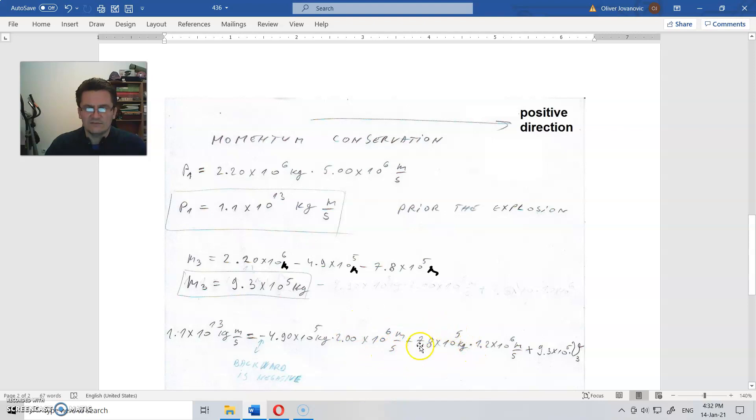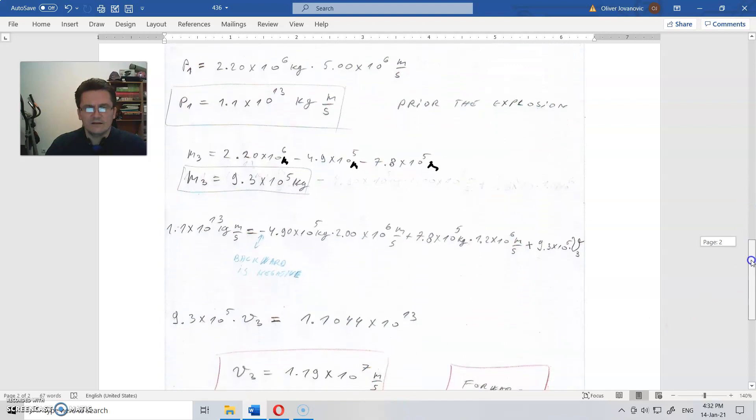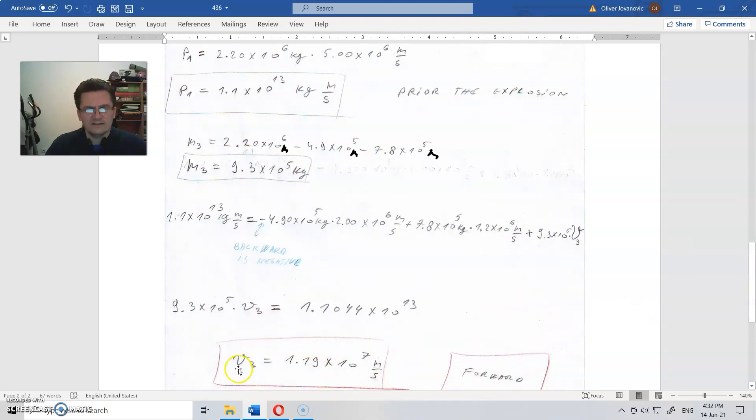Plus this mass times its speed, it is positive because it is going in the same direction as this one. And we assume plus this mass times this unknown speed. And from here we find this.